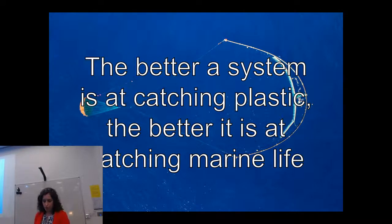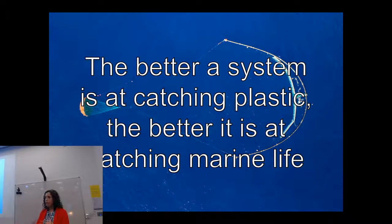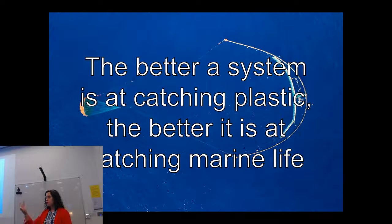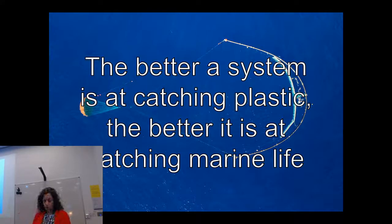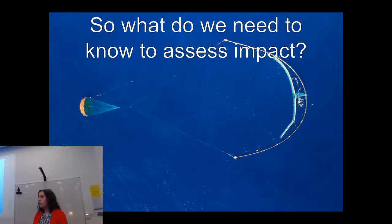The reality is: the better the system is at catching plastic, the better it will be at catching neustonic marine life. Both are really close to the surface, both drift passively, and both can be held by this system for indeterminate periods of time. The key difference is that neustonic organisms are not adapted to be around hard surfaces or to be corralled. When you take care of jellyfish you have to avoid them touching the sides — they're only two cell layers thick — so if they bang around on things, they're toast.